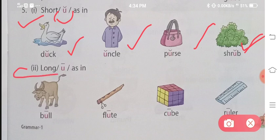Now, we will compare this with the long U sound. Bull. Bull. Flute. Flute. Cube. Cube. Ruler. Ruler. Here the U sound we gave was very long. So these were the short sounds and long sounds of U.